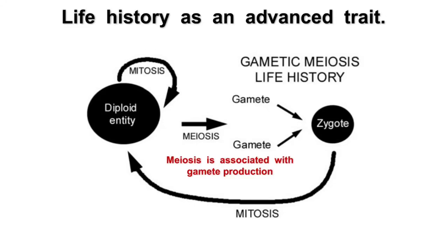Hello and welcome to Nikolay's genetics lessons. Today we are going to talk about gametic meiosis, which is an advanced mode of sexual reproduction that happens in animals and in some plants.